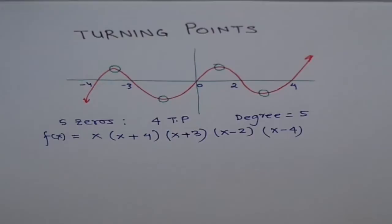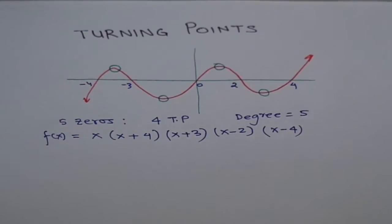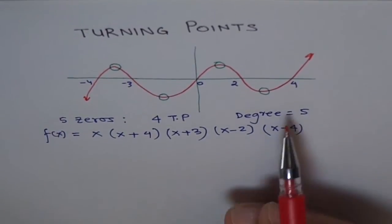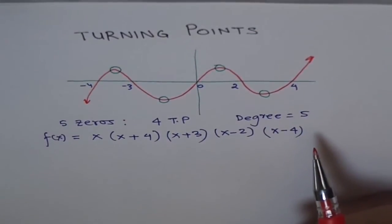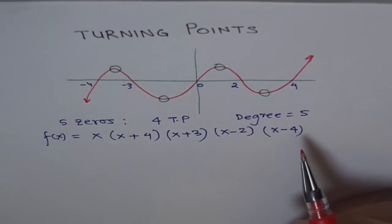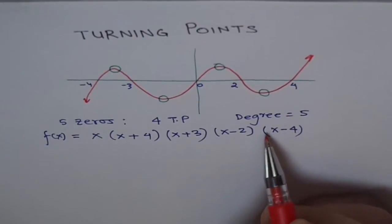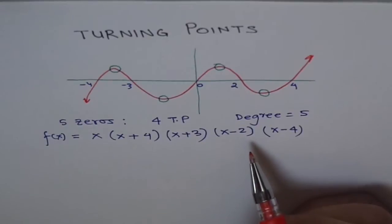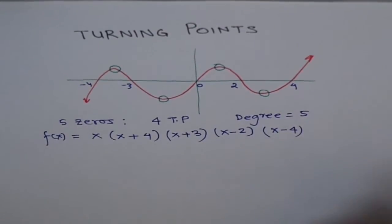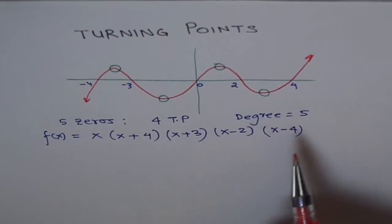A degree 5 polynomial can have maximum 5 zeros and 4 turning points. Now the relation is: 5 zeros and 4 turning points. What can happen? The zeros can fall on one another — there could be a combination. Let us now consider other degree 5 polynomials.